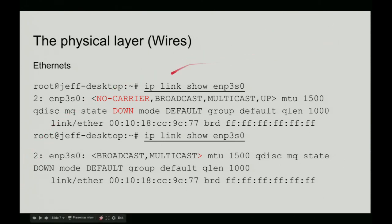Here is the IP command. This interface is broken because it's got no carrier — the wire isn't plugged in. Then I plug in the wire and the interface still doesn't work. You can't tell, but there's a value here that's missing — it should say it's down but it doesn't. I talked to the people who wrote IP and they said they can't fix it because there are people who parse this output and changing it would break things. But put in a patch, make it a flag, make it optional and they'll consider it. I'm going to dust off my copy of Kernighan and Ritchie and go write some software.